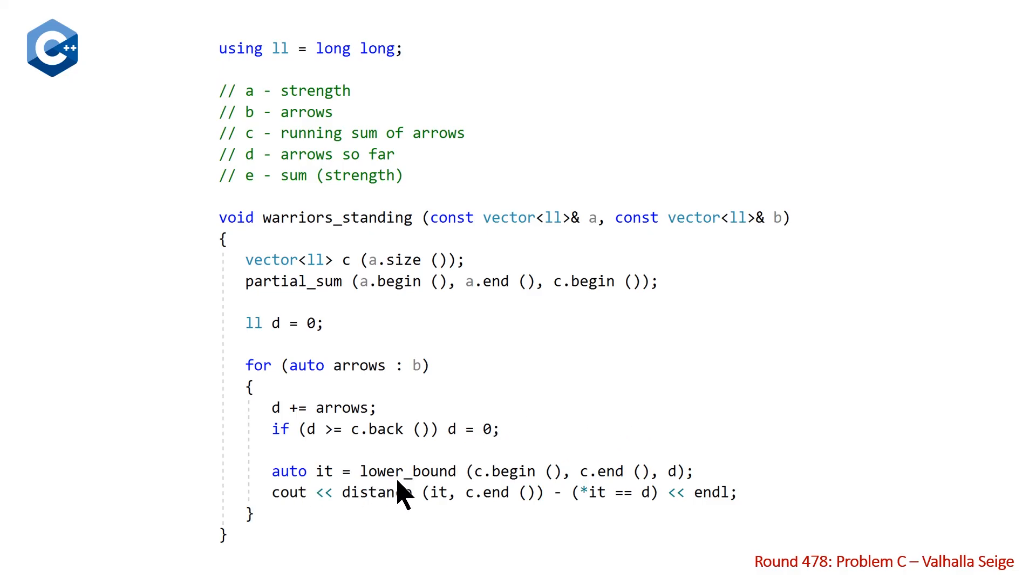And so once we've done this, we have our value d, and then we make our call to lower_bound, passing in the ranges begin and end from our vector c, and then passing in the value d. And then all we have to do at this point, like I said before, is we use our distance function, which will calculate the distance between the iterator that was returned from our lower_bound function and the end of our vector c. And the only catch is that we have to subtract one if we found the value d exactly. So if we found one past it, then we don't need to subtract this. But if we found it exactly, that means that we want to reduce the first still standing warrior because he actually got killed with the last arrow that was shot. And that's the only case we need to worry about.